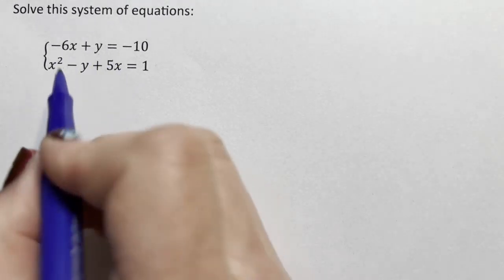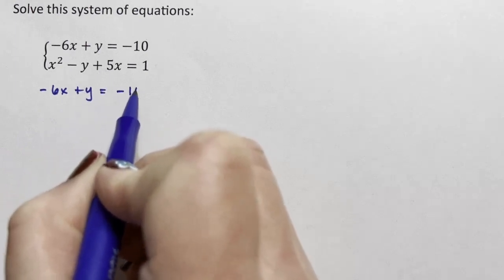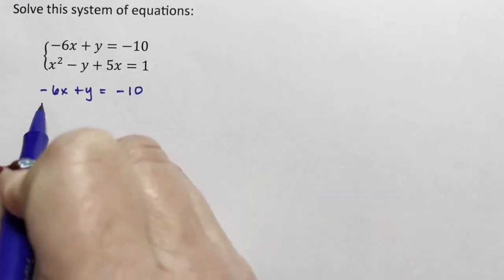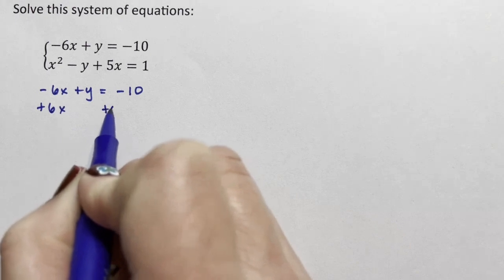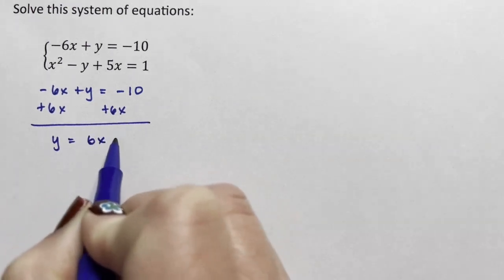Okay, so the first thing I'm going to do is take this negative 6x plus y equaling negative 10 and solve it for y. I'm going to add the 6x to both sides and get y equals 6x minus 10.